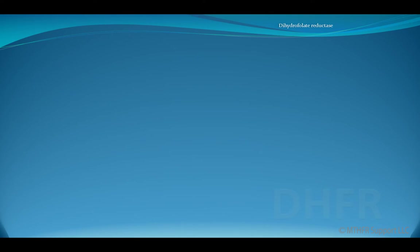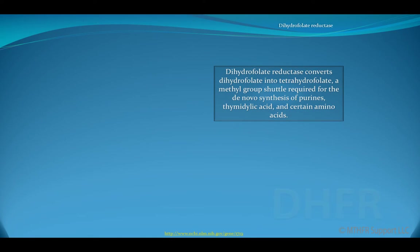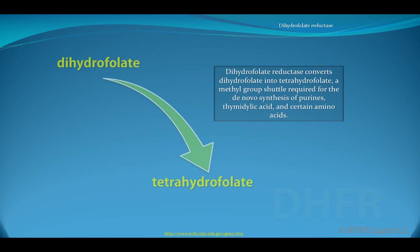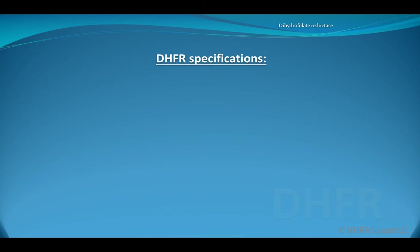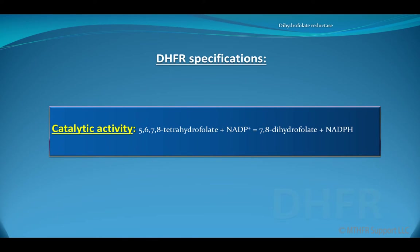DHFR stands for dihydrofolate reductase. Dihydrofolate reductase converts dihydrofolate into tetrahydrofolate, a methyl group shuttle required for the de novo synthesis of purines, thymidylic acid, and certain amino acids. The catalytic activity is 5,6,7,8-tetrahydrofolate plus NADP, which equals 7,8-dihydrofolate plus NADPH.